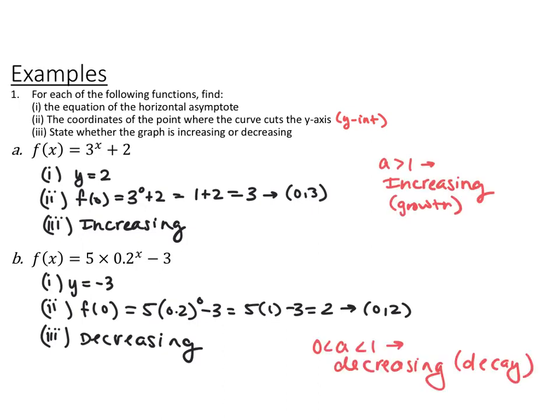If you have a base greater than 1, you're multiplying by something bigger than 1, so your numbers get bigger every time — that's always an increasing function, which we call exponential growth. If you have a base between 0 and 1, you're multiplying by something less than 1, basically dividing, so values get smaller every time — that's always a decreasing function, which we call exponential decay.